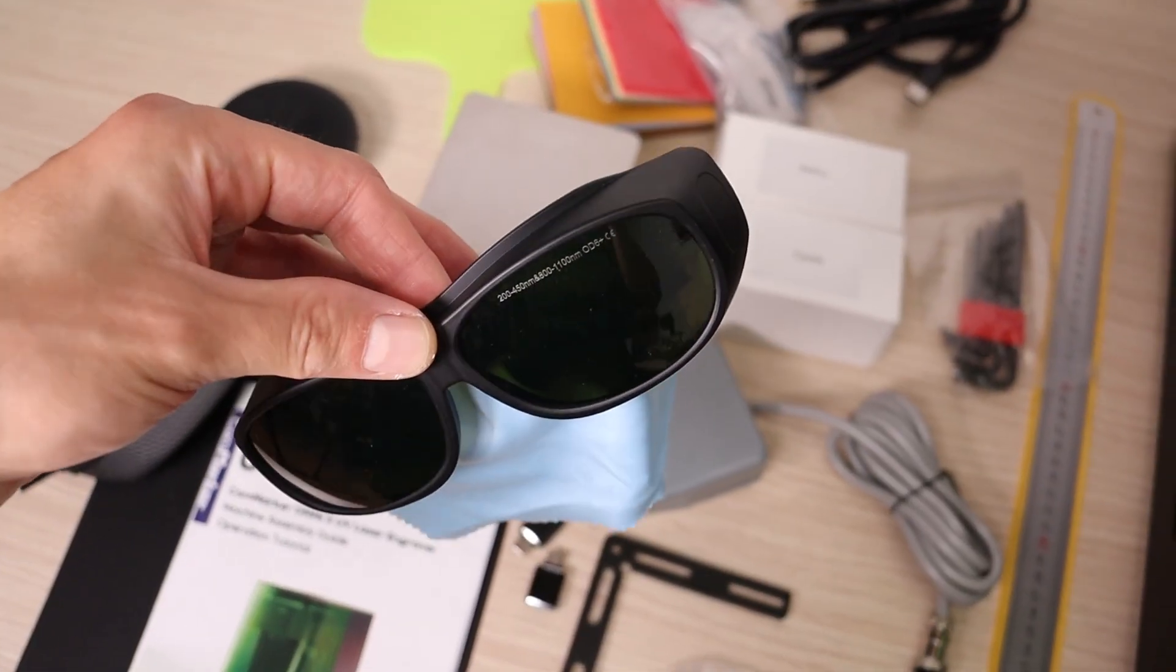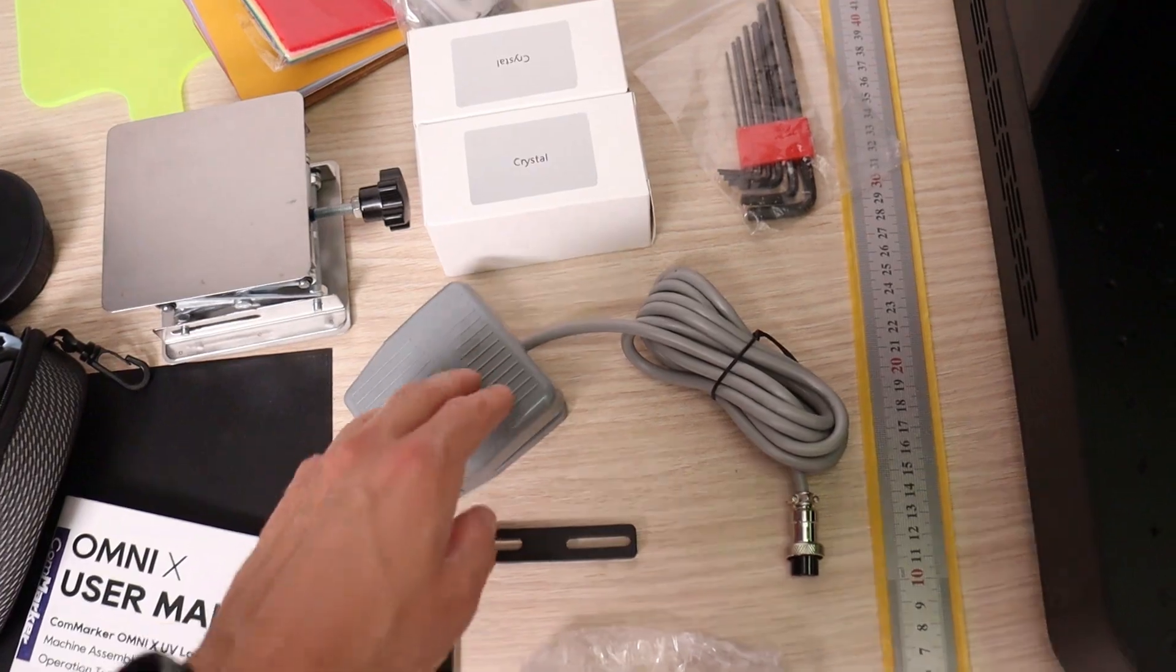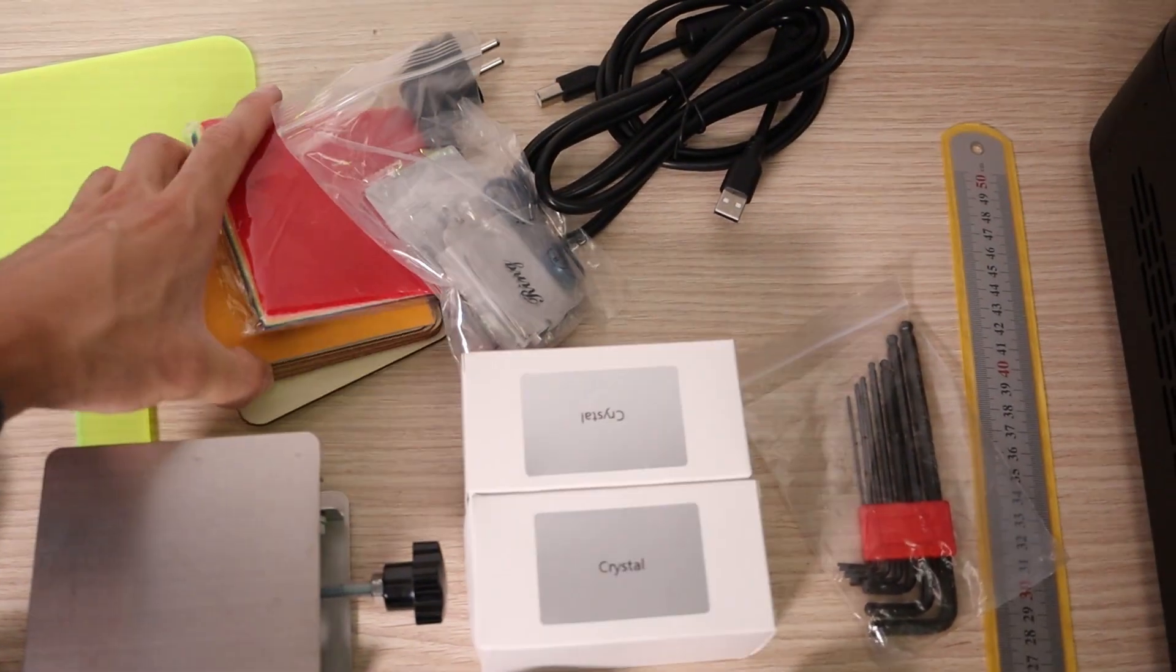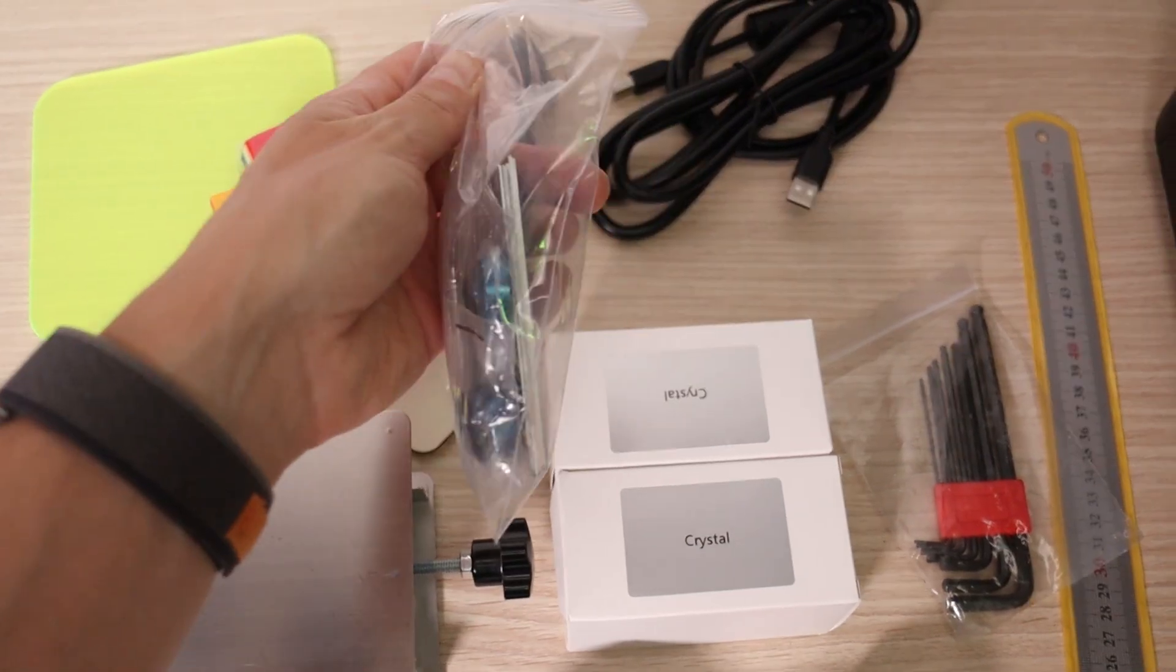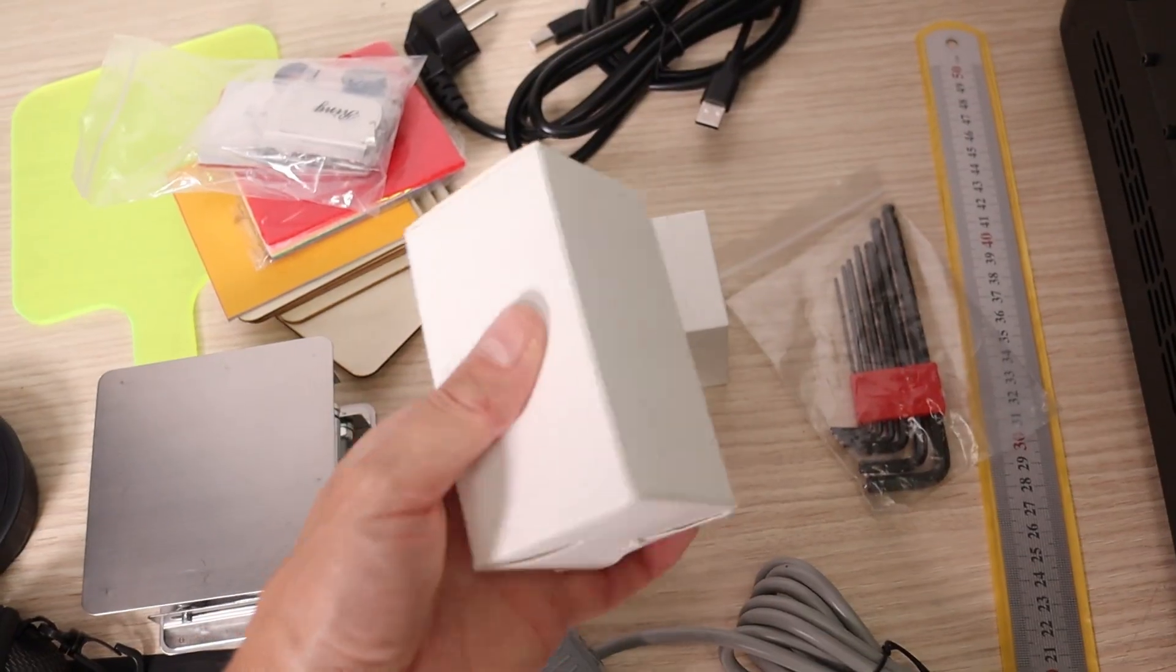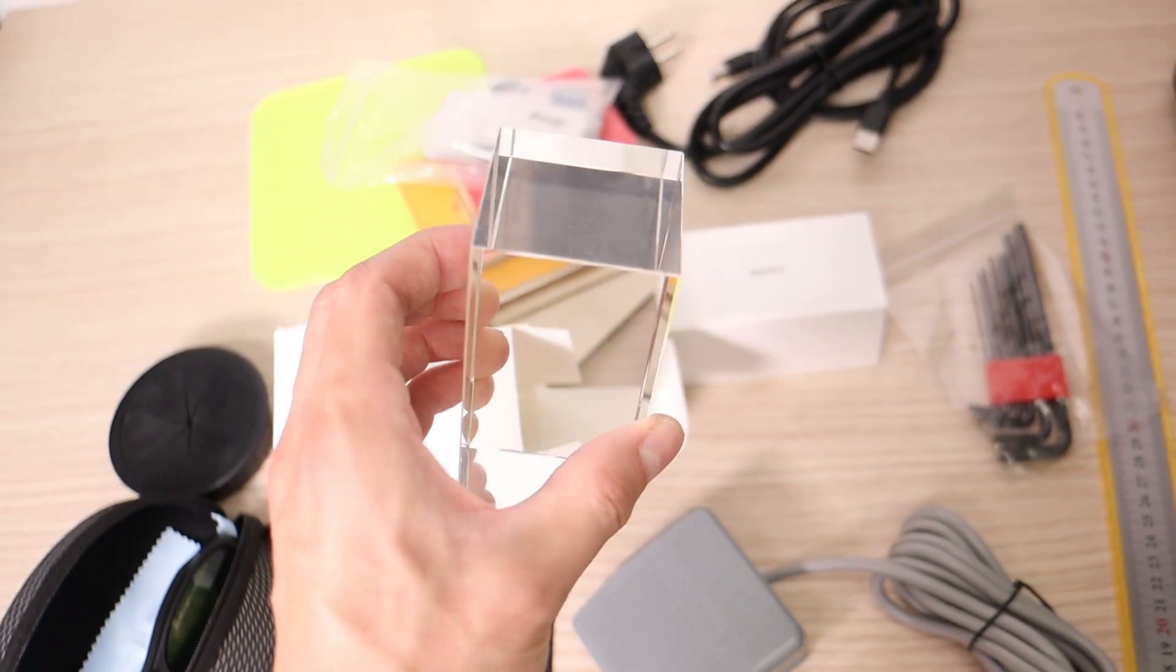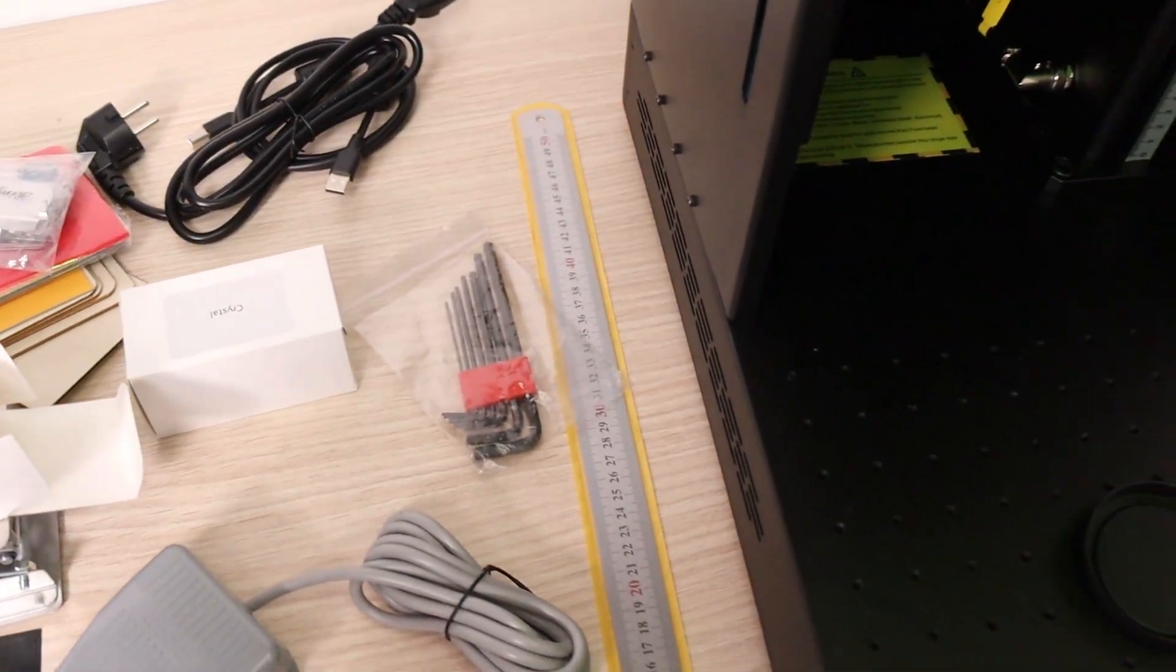In the box, you also get a pair of safety goggles, a lifting table, a foot switch, a preview acrylic sheet, and a little materials pack with plywood, paper, fabric, business cards, and even some keychains to practice on. CommMarker also throws in two glass crystals so you can jump straight into 3D engraving, plus a metal ruler for manually setting the focus if you want to go old school.